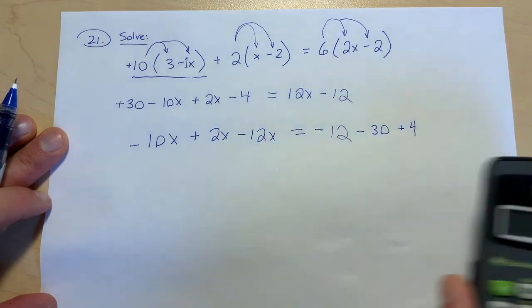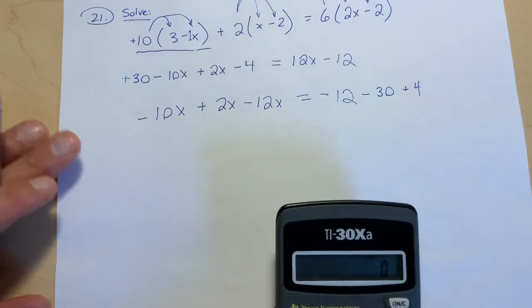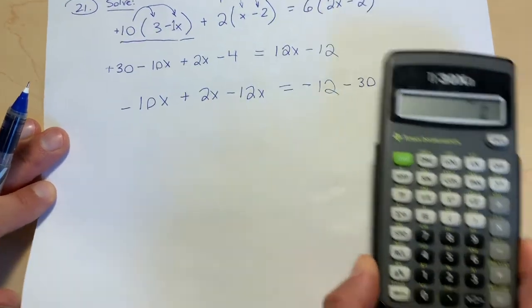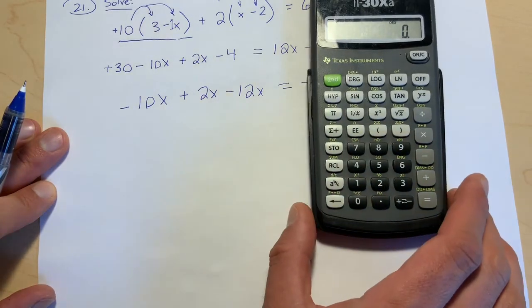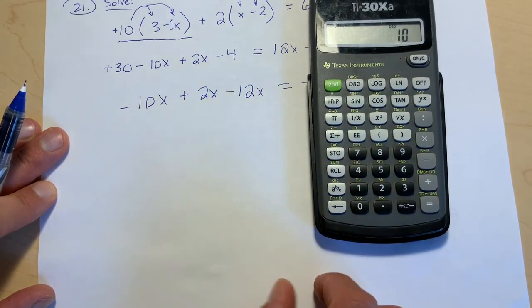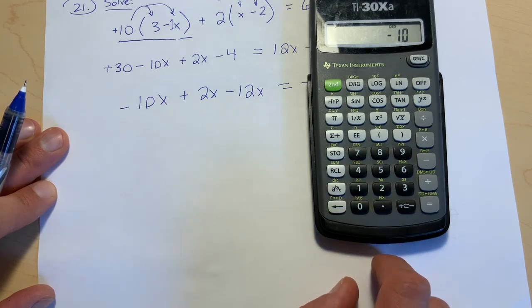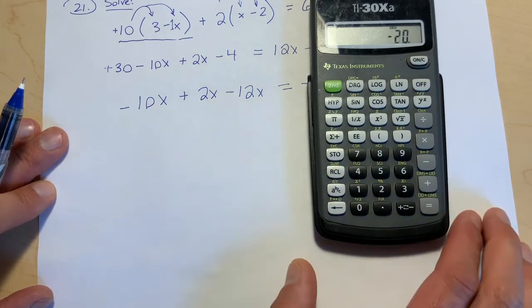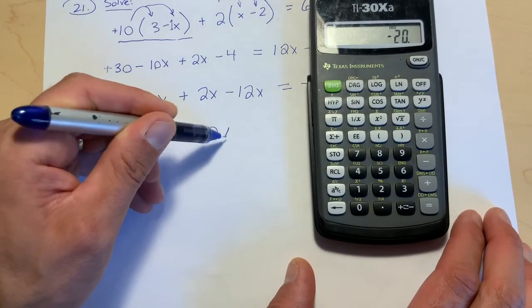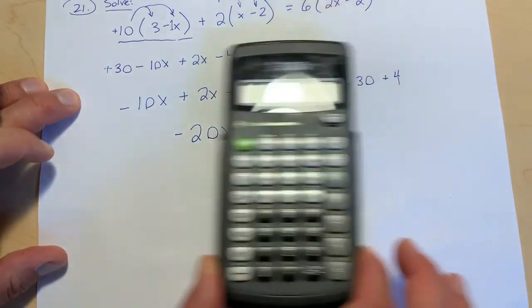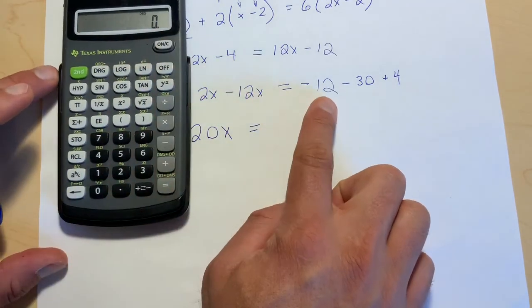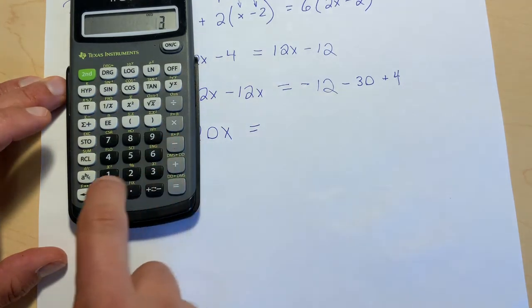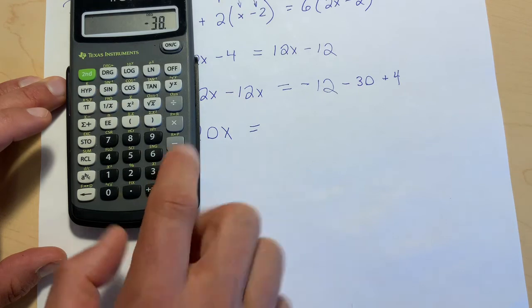So now we can collect those like terms. We've just grouped them and now we can actually figure out what their values are. So we'll go negative 10. When you input that, put the number in first, 10, and then I'm going to hit negative. 10 plus 2 minus 12 gives us negative 20x. And on the right side, negative 12, so 12 and then the negative sign, minus 30 plus 4, negative 38.